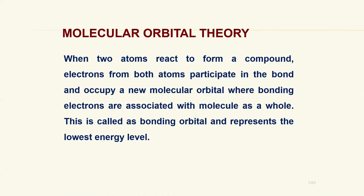To explain all this we have molecular orbital theory. When two atoms react to form a compound, electrons from both atoms participate in bond formation and occupy a new energy level known as a molecular orbital, where bonding electrons are associated with the molecule as a whole. This is called the bonding orbital, and the bonding occupancy represents the lowest energy level.